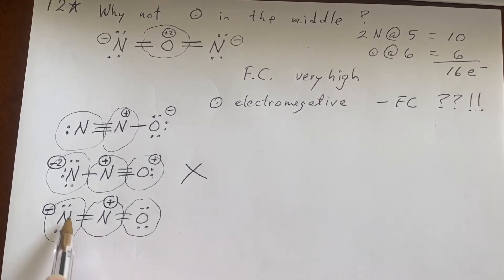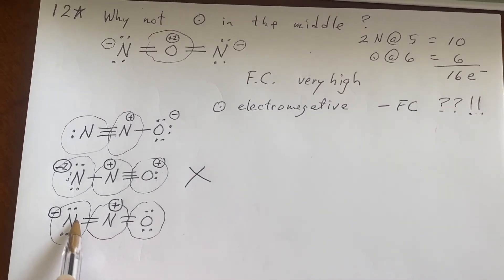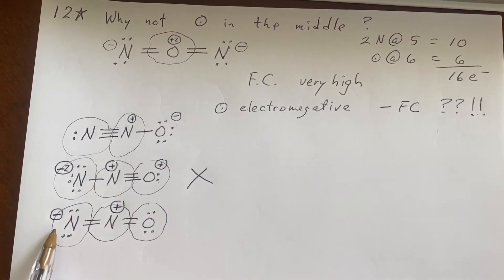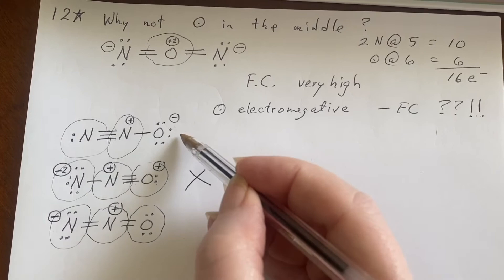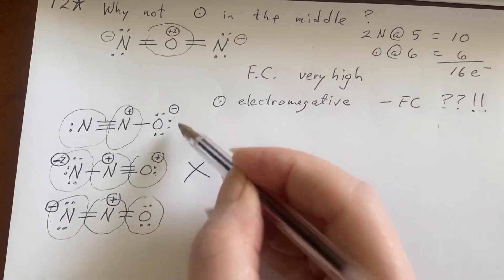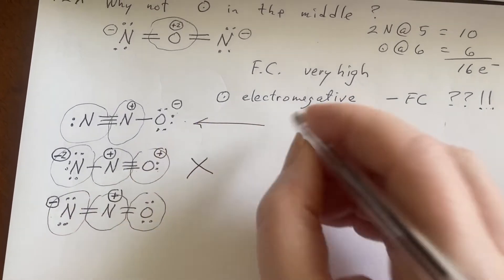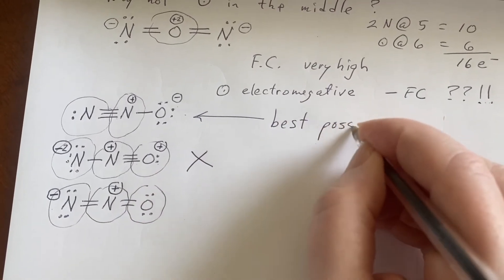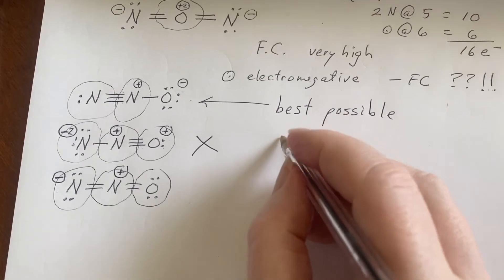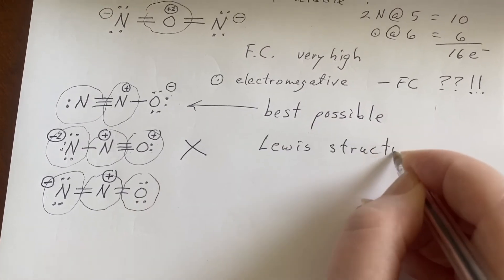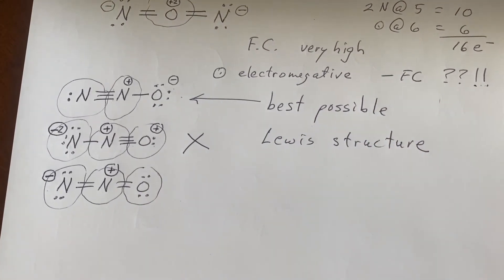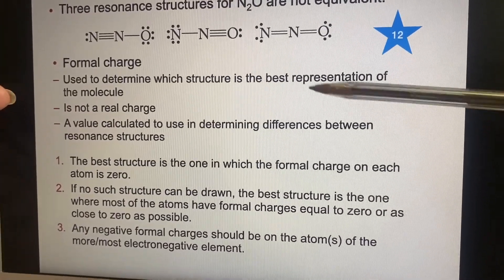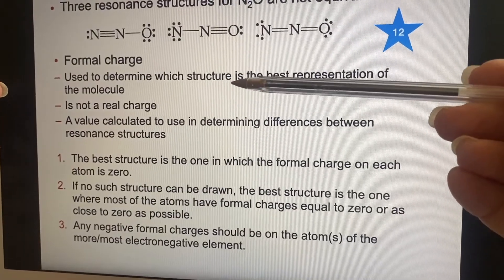These two are still in the running because it's a single positive and a single negative formal charge. However, when we look to see where the negative charge is, we find in one case it's on the oxygen, and in the other case it's on the nitrogen. Since the oxygen is more electronegative, this is the best possible Lewis structure for dinitrogen oxide.